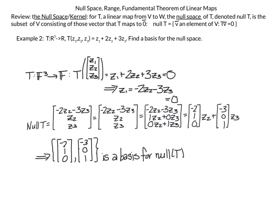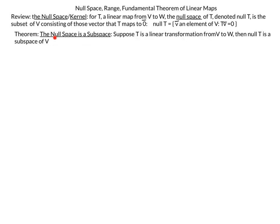The null space is spanned by two vectors, so their span is a plane — meaning this transformation collapses an entire plane to a single point. The theorem states: if T is a linear transformation from V to W, then null(T) is a subspace of V. We proved this in the last video, so we will not repeat the proof here.